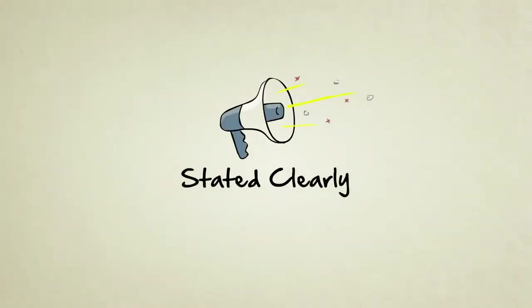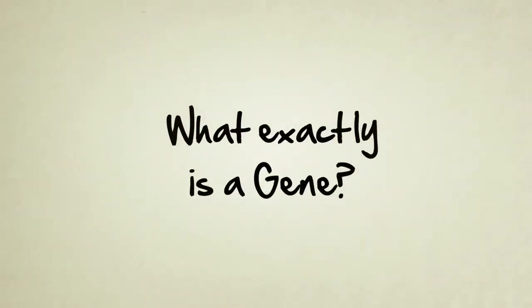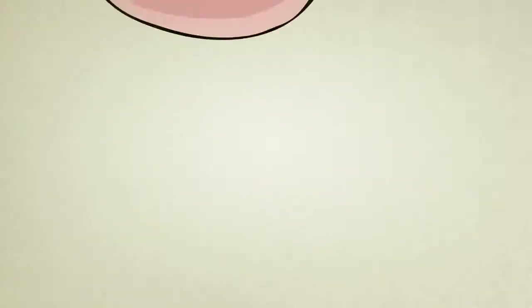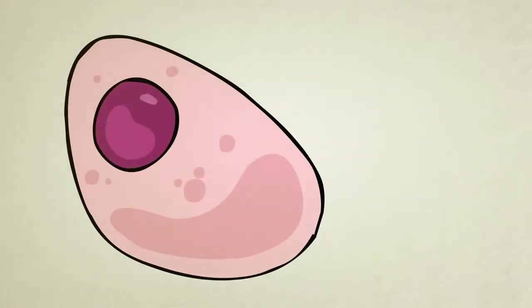Stated Clearly presents... What exactly is a gene? Each one of our cells contains 46 strands of DNA.